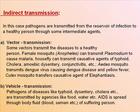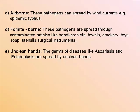Vehicle transmission: pathogens of diseases like typhoid, dysentery, and cholera are transmitted by agencies like food and water. AIDS is spread through body fluids like blood and semen. Airborne: pathogens can spread by wind currents — example, epidemic typhus. Fomite-borne: pathogens are spread through contaminated articles like handkerchiefs, towels, crockery, toys, soap, utensils, and surgical instruments. Unclean hands: germs of diseases like ascariasis and enterobiasis are spread by unclean hands.